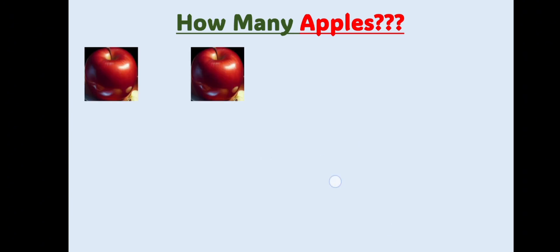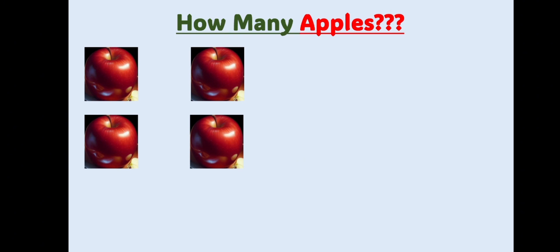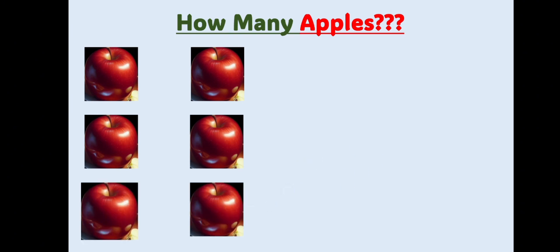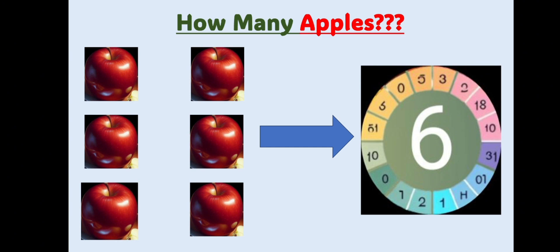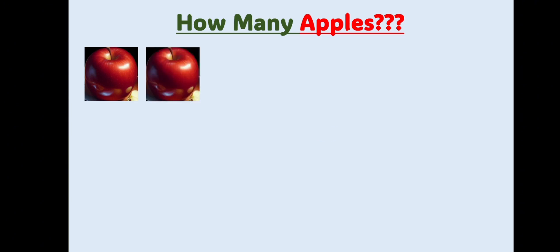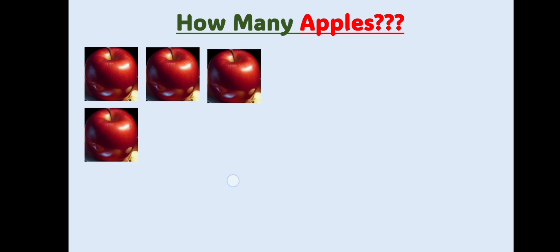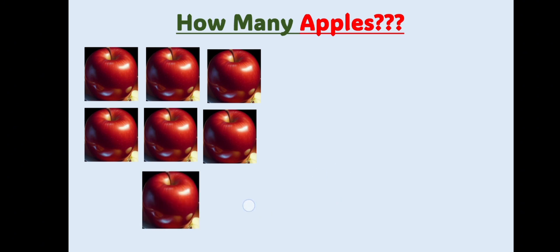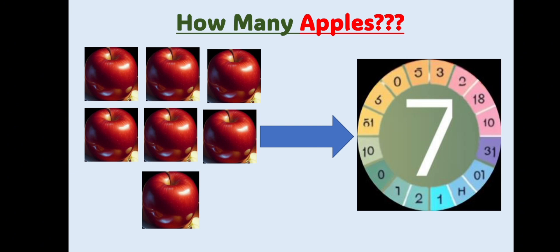One, two, three, four, five, six. One, two, three, four, five, six, seven. How many apples are there? There are seven apples. Seven apples.